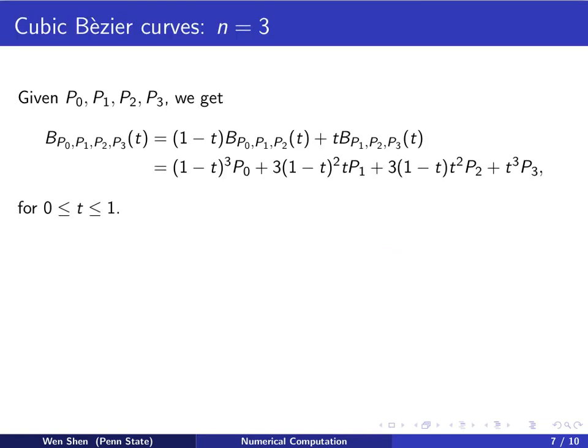Now let's add one more point, P3, and look at cubic Bézier curves. Once we've understood how to define the quadratic from the linear, defining the cubic from the quadratic is exactly the same. We have the quadratic Bézier curve from P0, P1, P2, and the quadratic Bézier curve from P1, P2, P3. Using these two, we do the same convex combination: multiply the left by 1 minus t and the right by t, and add them to form the cubic Bézier curve from P0, P1, P2, to P3.